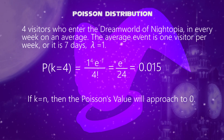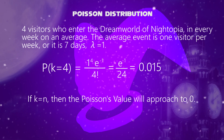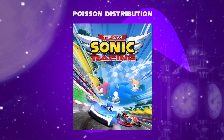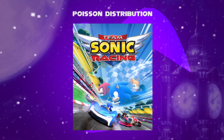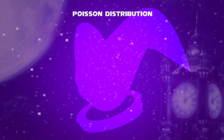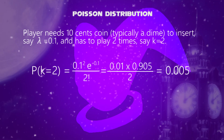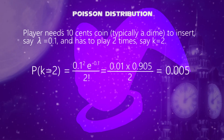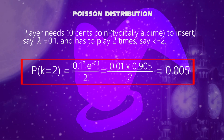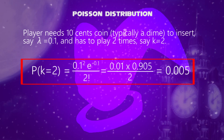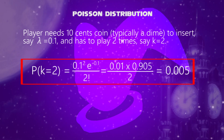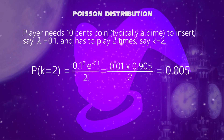So for numerous visitors, the Poisson distribution value will approach zero. Another example: say ten cents per player — one who enters to play the game Sonic Team Racing in arcade games — that is lambda equals 0.1. If he plays two times, say k equals two, we get 0.1 squared times e to the exponent minus 0.1, divided by two factorial. Thus the answer is infinitesimally small: 0.005.